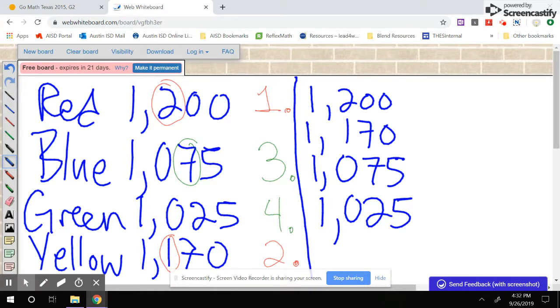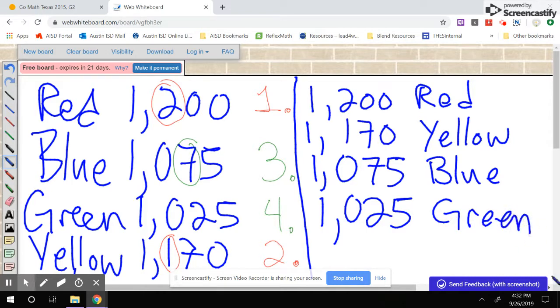So I need to match up which color belongs to each number so I can better understand the sentences of the answer choices. So 1,200 is red, 1,170 is yellow, 1,075 is blue, and 1,025 is green.